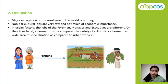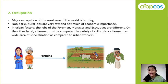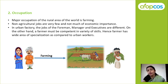The next characteristic is occupation. The major occupation in rural areas of the world is farming. Non-agricultural jobs such as carpenter, artisans, and blacksmiths exist, but they do not have much economic importance in the rural area.